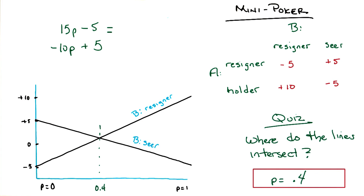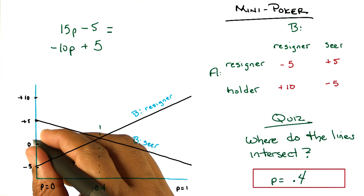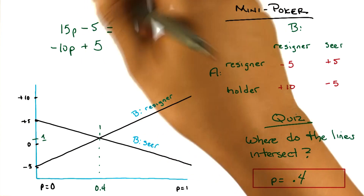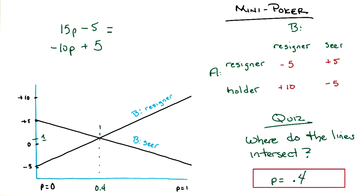Here's a question: what is the value of the game at p equals 0.4? I just plug it into those equations. Negative 10 times 0.4 is negative 4, plus 5 is 1. So the value here is, in fact, 1 cent. And if you put it in the other equation, you get the same thing.